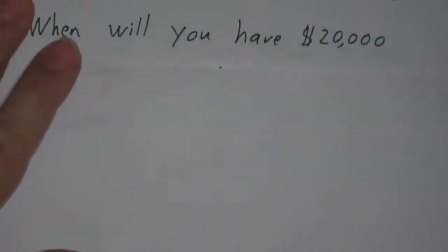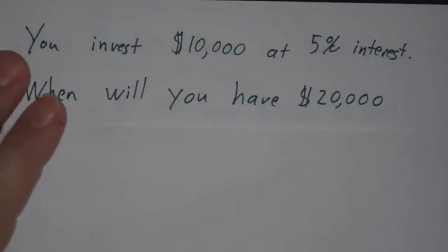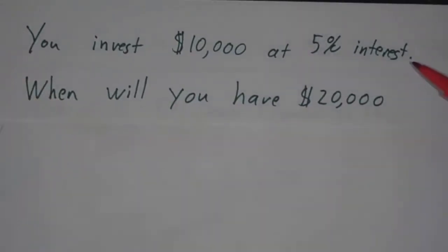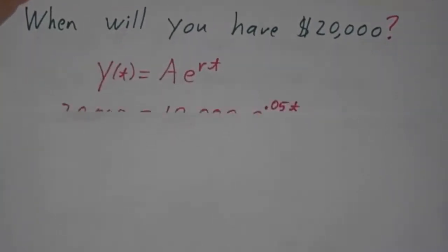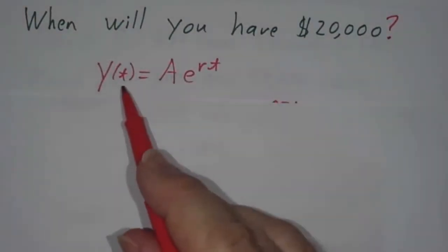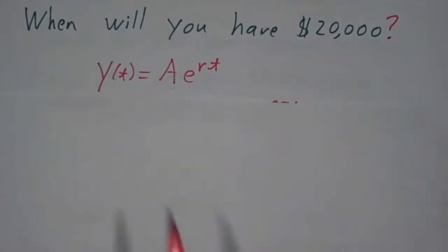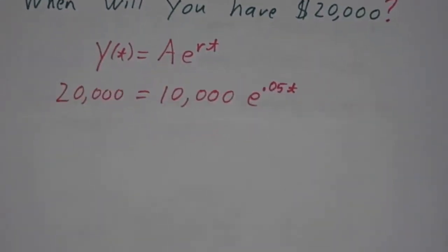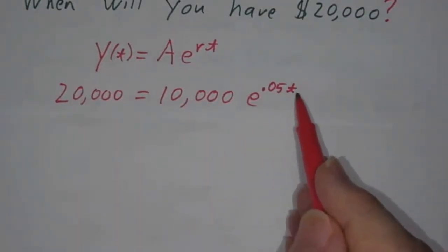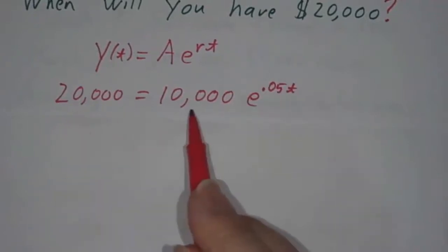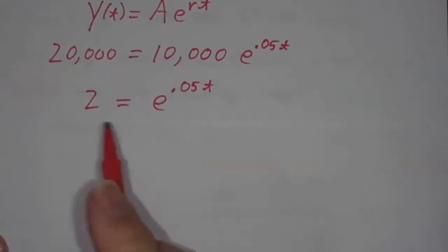Second problem. You invest $10,000 at something that returns 5% interest compounded continuously. When will you have $20,000? Okay. So again, you know that the amount of money you'll have after time t is a e to the rt. And you know that a was 10,000, and r is 0.05, and you want to figure out t. So 20,000 is 10,000 e to the rt. Divide by 10,000, you get 2 is e to the rt.